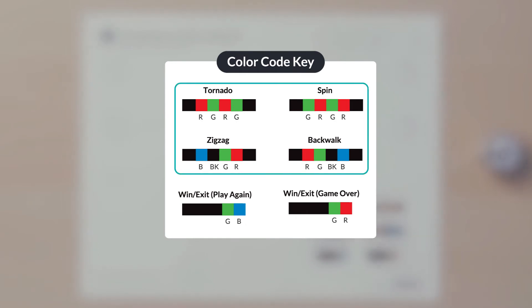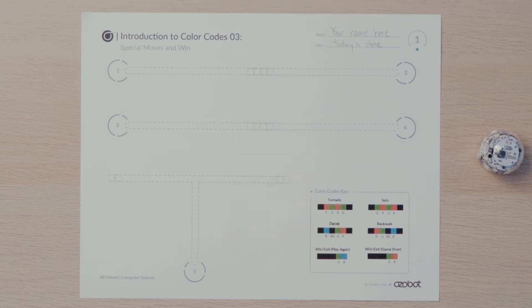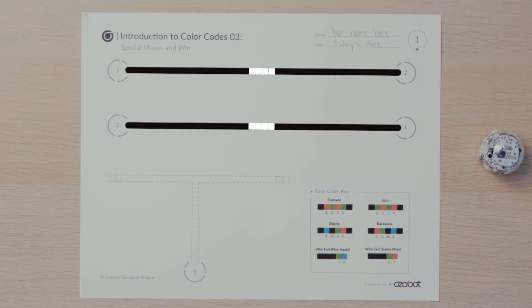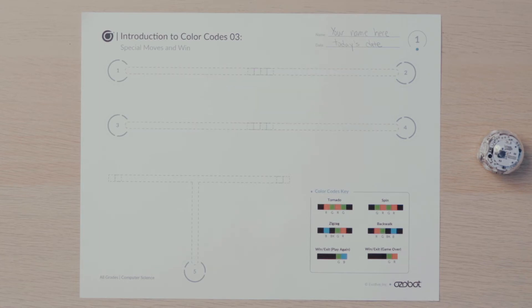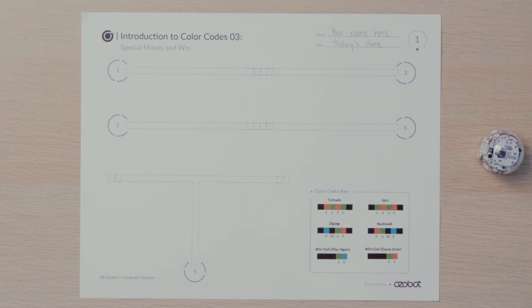Four color codes will program the bot to perform a win-exit. Now look at the missing color codes on the three different pathways. Where do color codes with a sequence of four colors go on a line? A color code made up of four colors, like the special moves, needs to be surrounded by a black line on both sides. A color code with two colors, like a win-exit, needs to be used at the end of a black line. Now that you have found the color codes and located where the missing color codes need to go, you will use your color code markers to complete all three pathways.